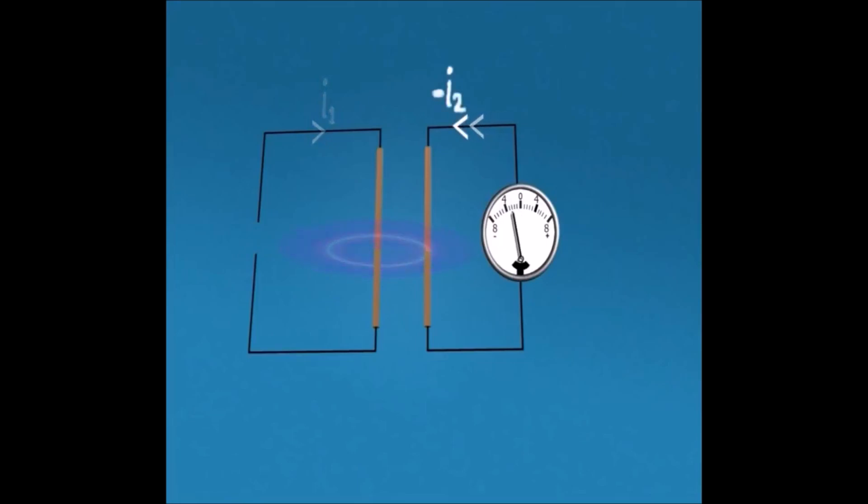This is because of reduction in flux density around the first conductor and the second conductor tries to oppose this change in flux as per Faraday's law of electromagnetic induction.